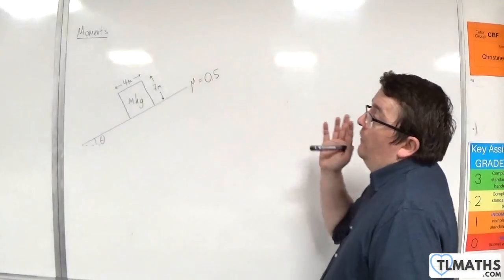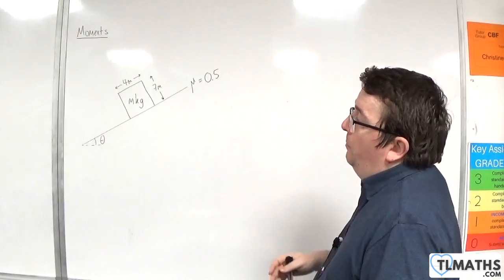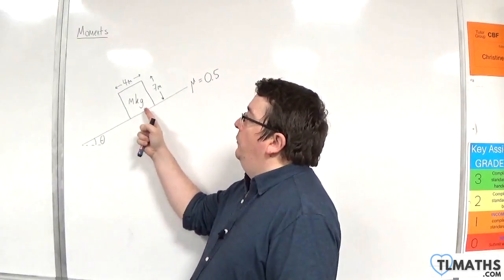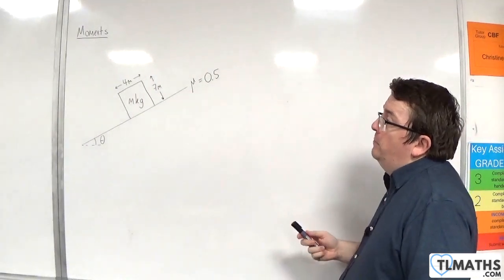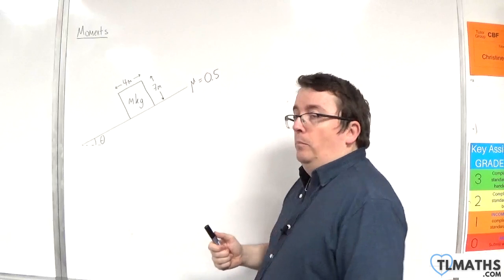Let's say we have a block on an inclined plane of mass m kilograms with a width of 4 meters and a height of 7 meters. The coefficient of friction between the block and the plane is 0.5.